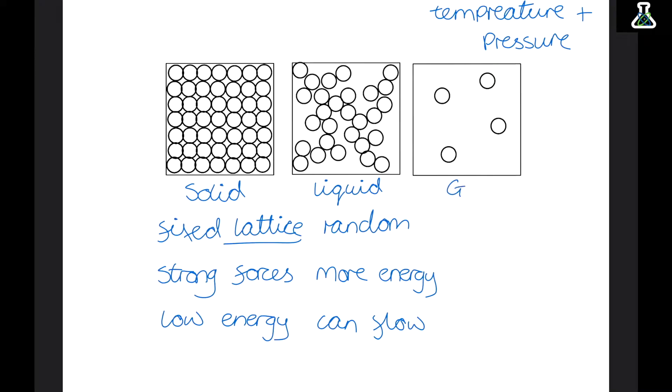The last state of matter is a gas. Now gases have no shape. And this is because the particles have really low forces of attraction. There is nothing really holding these particles together and they have got lots of energy to be completely free moving.